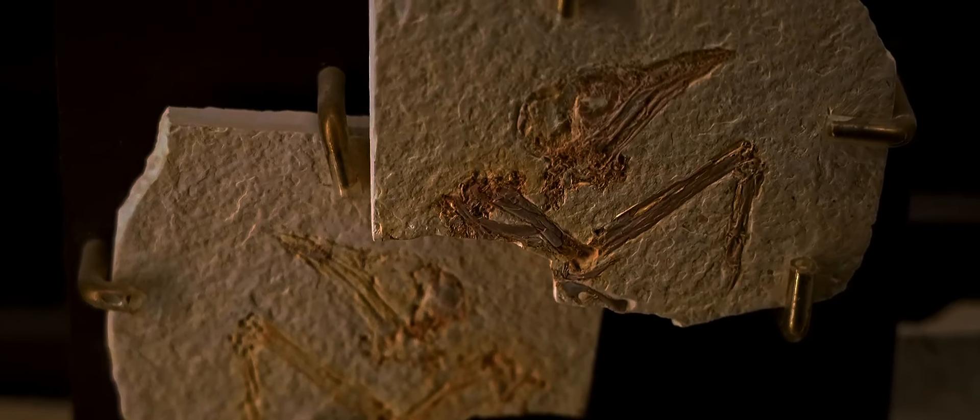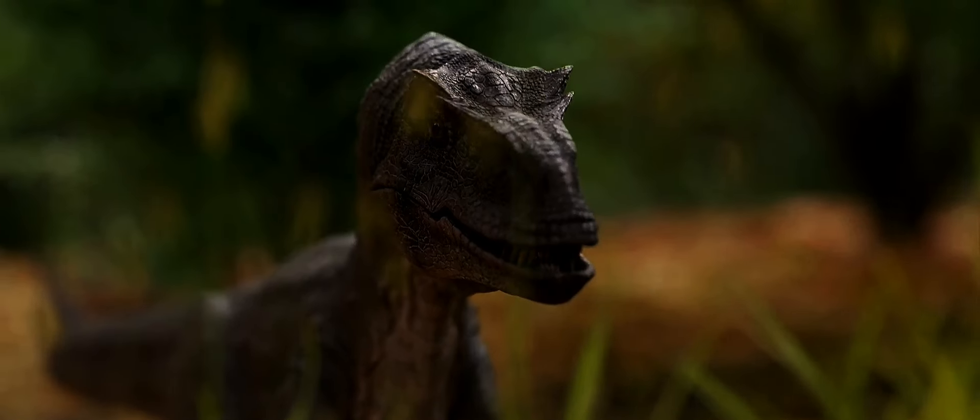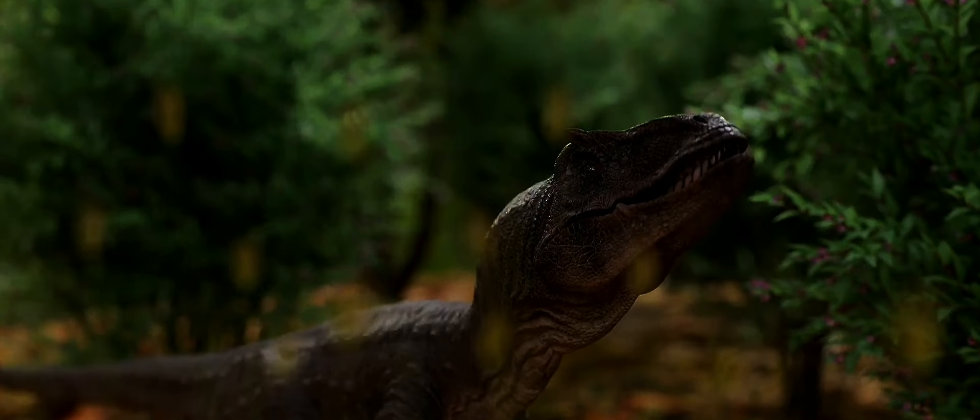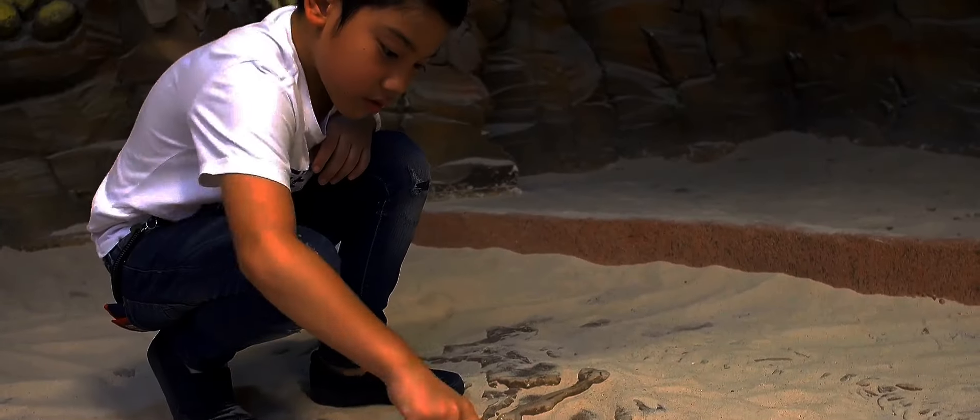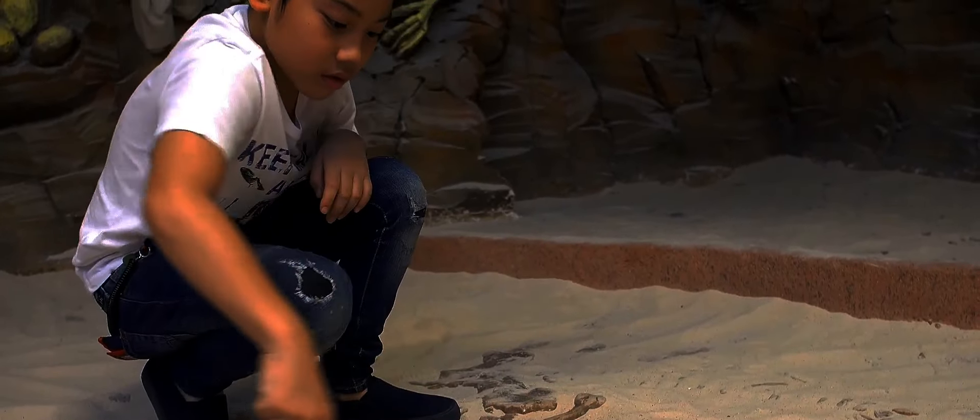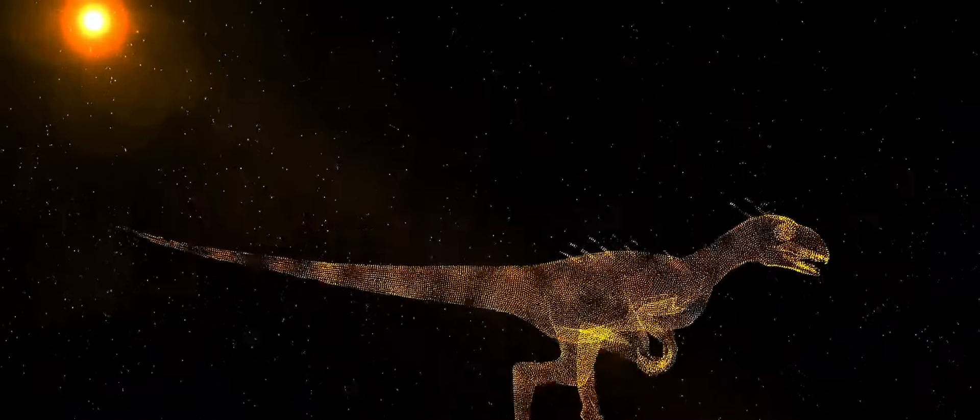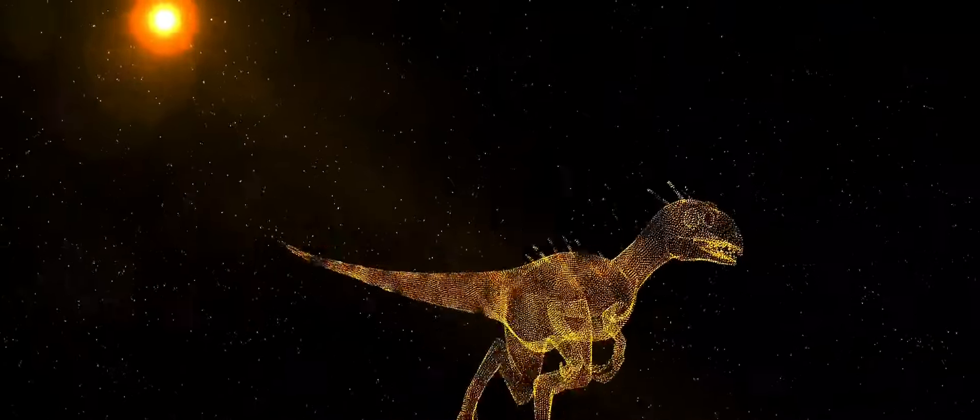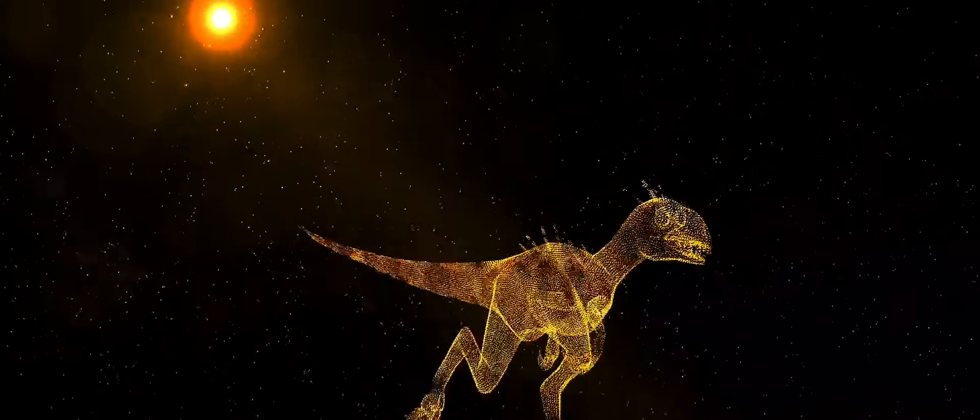In the early Triassic, dinosaurs started as small, bipedal creatures. But as the eons passed, they evolved into a multitude of forms. Some sprouted wings and took to the skies, others grew long necks to reach the treetops, while others became massive predators, their names synonymous with terror and power.